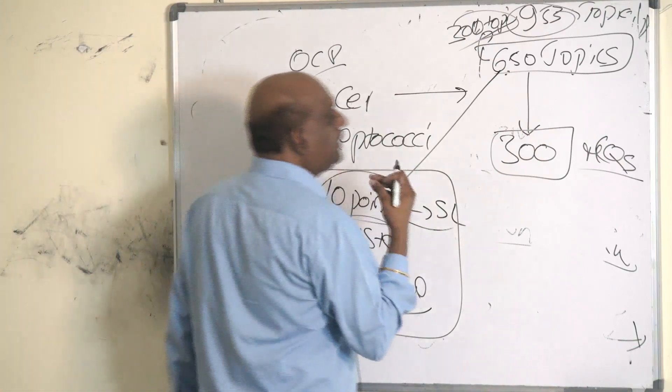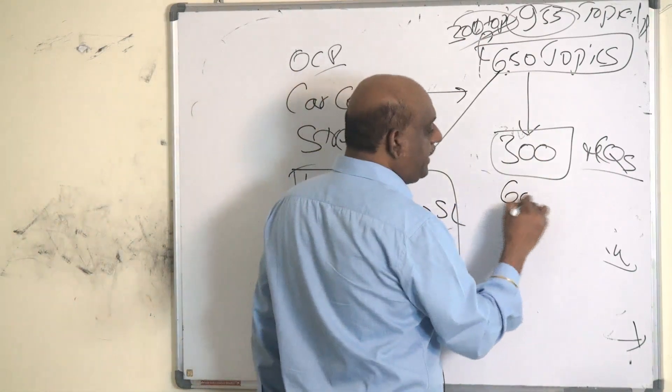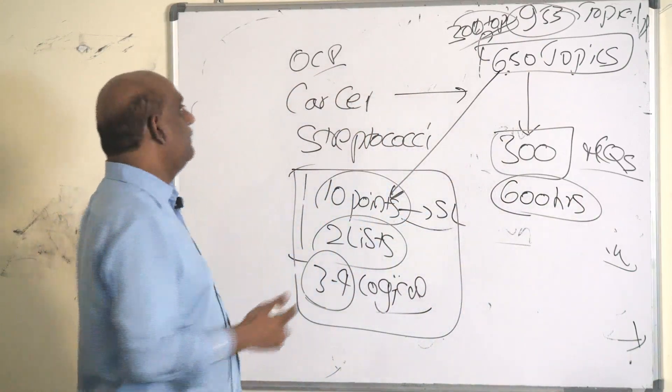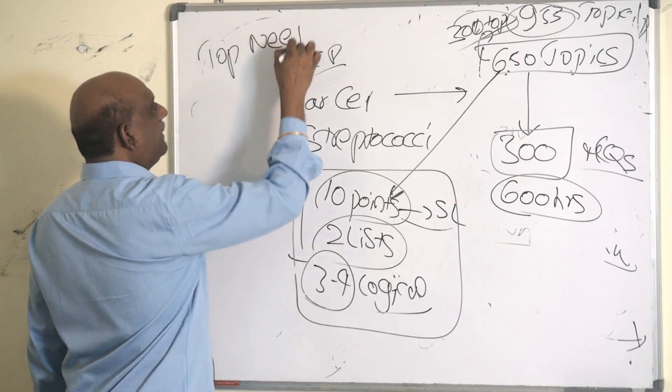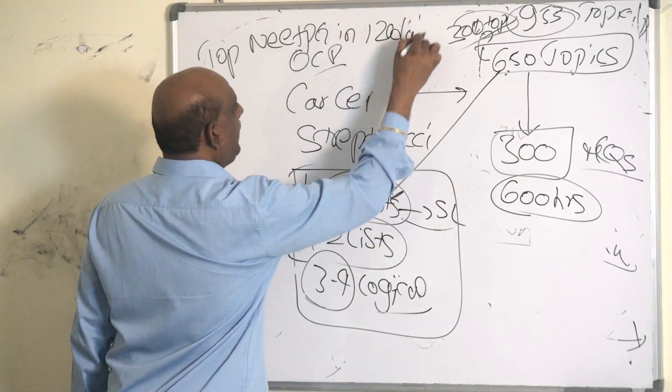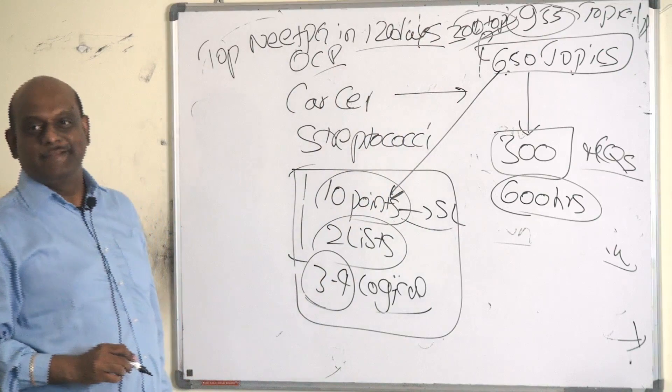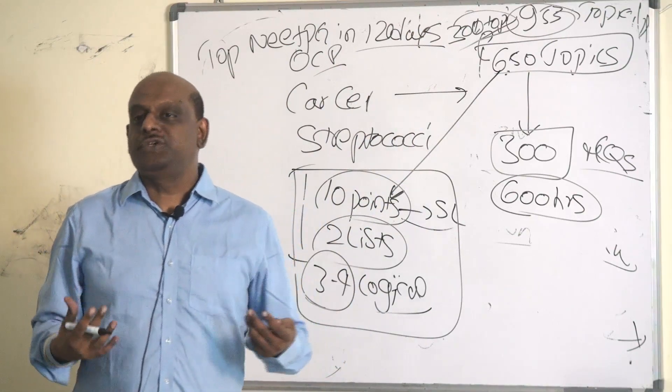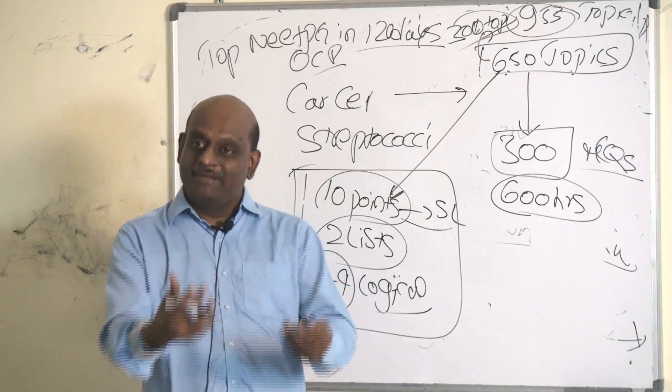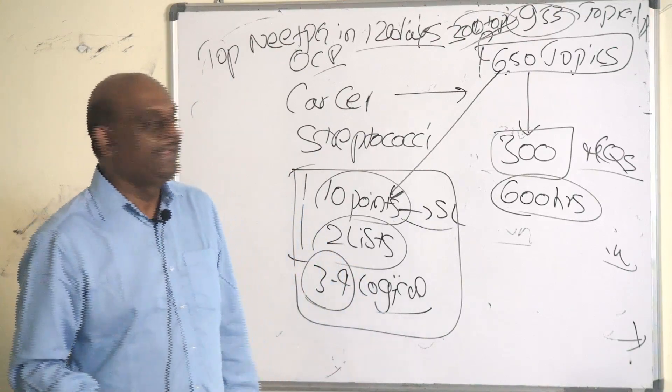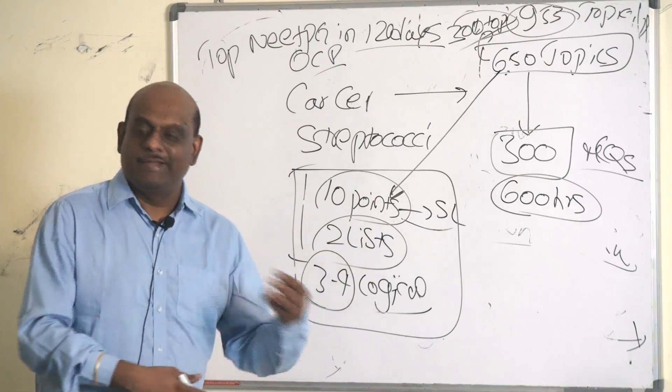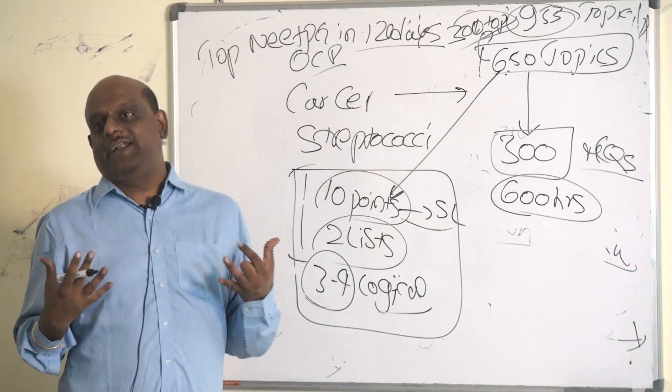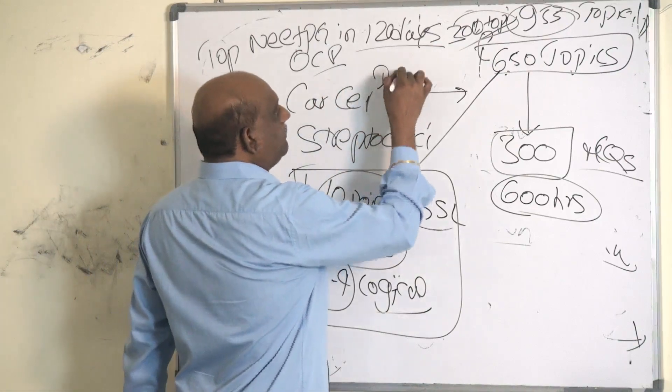So how much time I want from you? I want 600 hours of your time. Can you give it to me? So we designed a program called Top NEET PG in 120 days. So you are all adult learners. In fact, adult learners love to sit in their own comfort of solitude and self-prepare by consuming the content online.